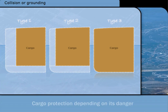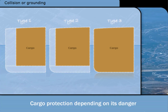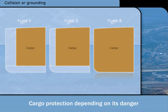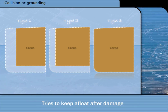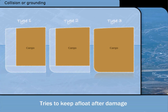The rules require the cargo tanks to be in protected locations, depending on the danger from the cargo. A range of ship types is defined, which provide different amounts of protection to the cargo tanks. Type 1 gives the most protection, and Type 3 the least. After damage, the regulations address the ability of the ship to stay afloat without capsizing. Sinking or capsizing would probably result in all the cargo escaping into the sea.